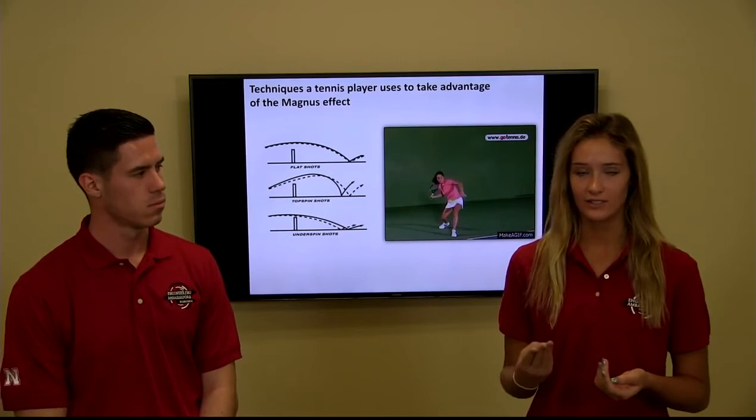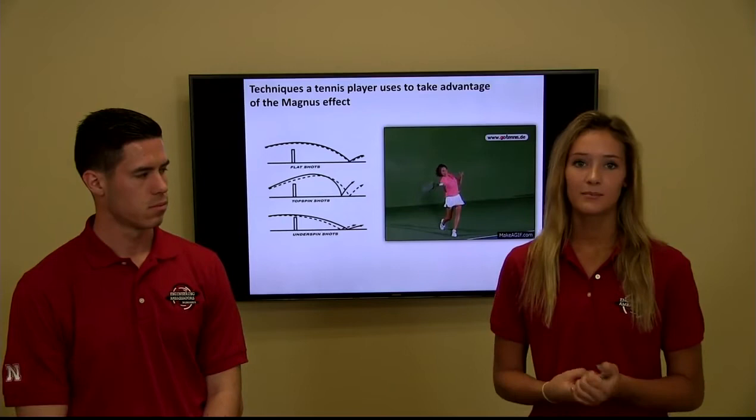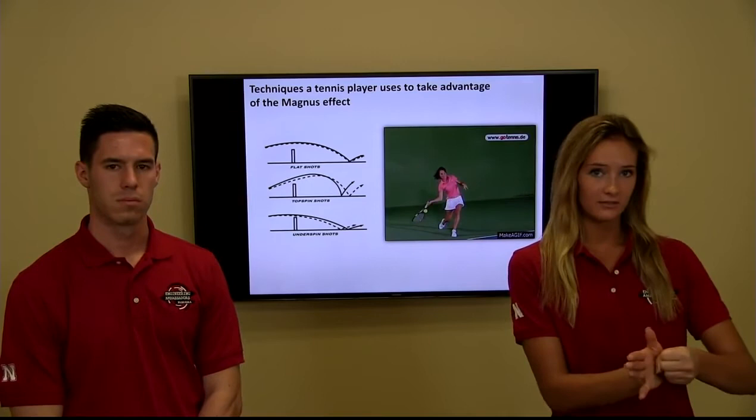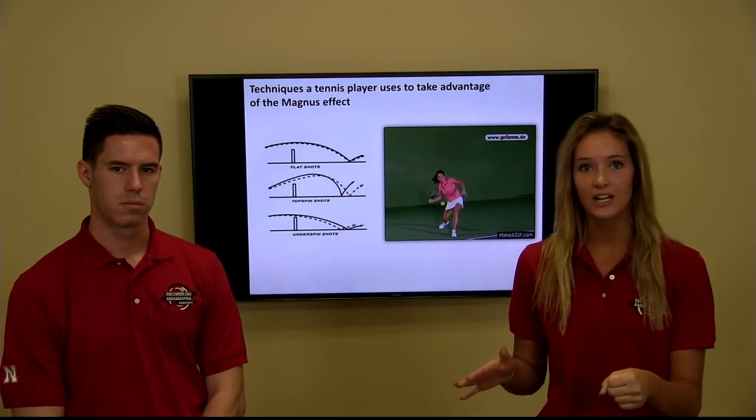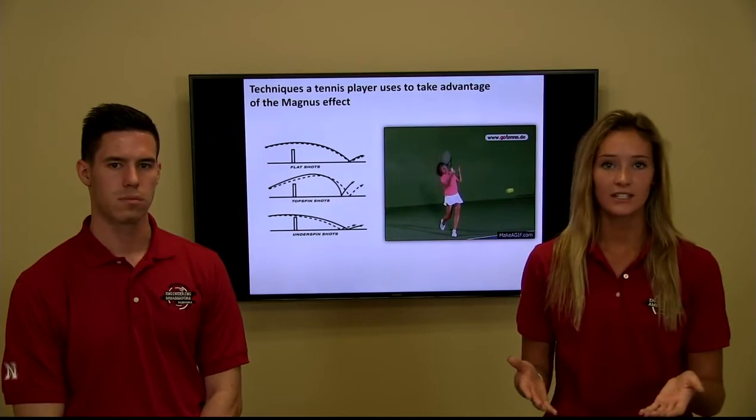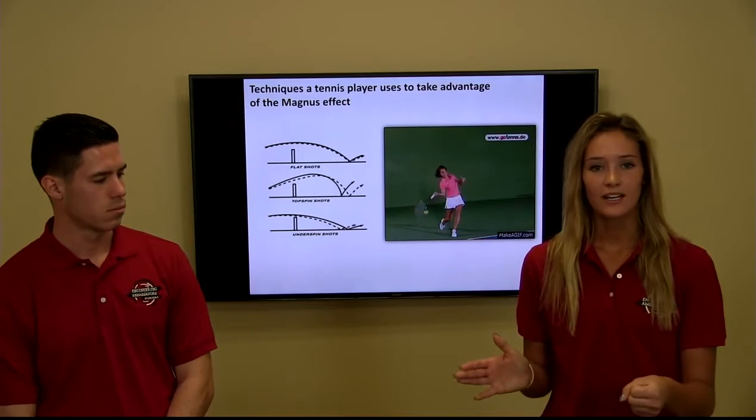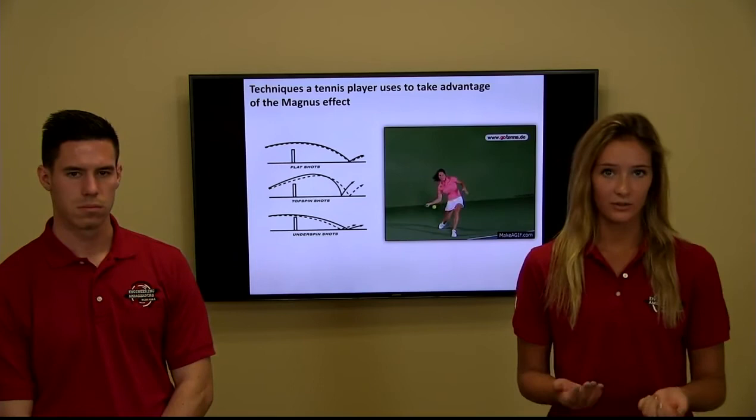As a tennis player in high school, I learned you can hit three different types of shots. The first is a flat spin shot, where the racket strikes the ball at a straight angle to make it go straight forward. The second is a top spin shot, where the racket hits over the ball giving it a forward rotation, causing it to fight gravity and stay airborne longer. The third is an under spin or back spin shot, where the racket hits under the ball giving it backspin, causing it to drop to the ground more quickly.